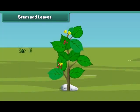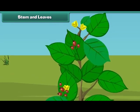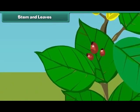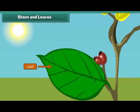Friends, do you know which part of the plant helps them to prepare food? That's right — it is the leaves. Leaves are green in color and are born out of a stem.